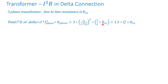The phase resistance in a delta is three-halves of the line-to-line resistance. I'd recommend watching a video that talks about the relationship between phase resistance and line-to-line resistance in Y or delta connections. Carrying out the calculation gives 1.5 times the line current squared times the line-to-line resistance — the same formula as for the Y connection. So it doesn't matter whether it's a Y or delta connection: I squared R equals 1.5 times line current squared times line-to-line resistance. Just make sure you know how to calculate the line current and line-to-line resistance, as they differ for Y versus delta.